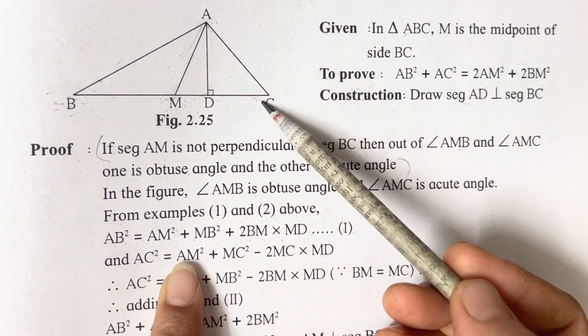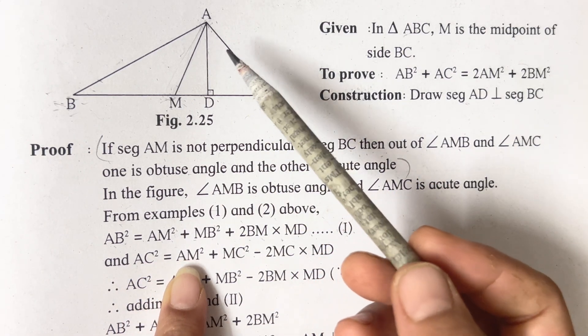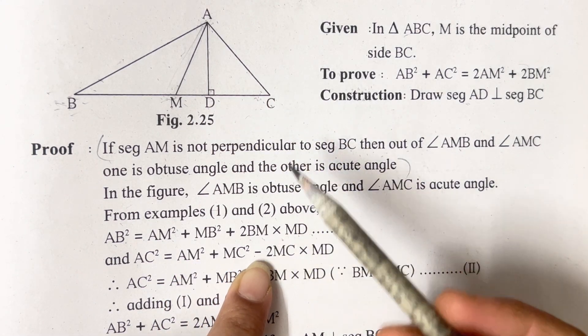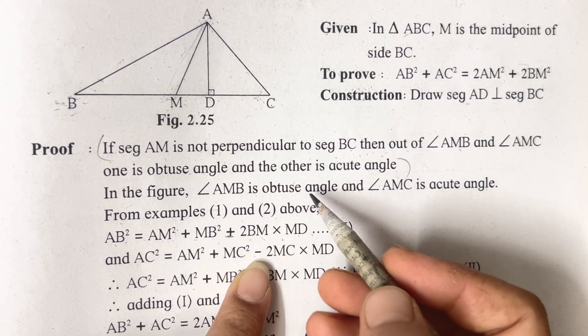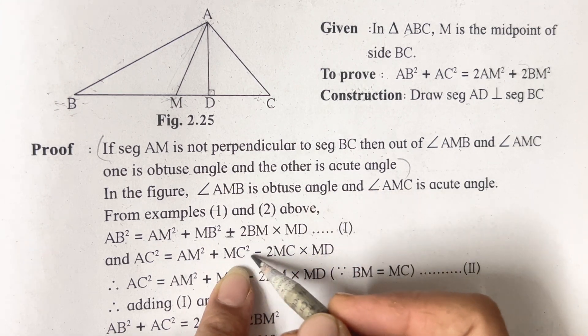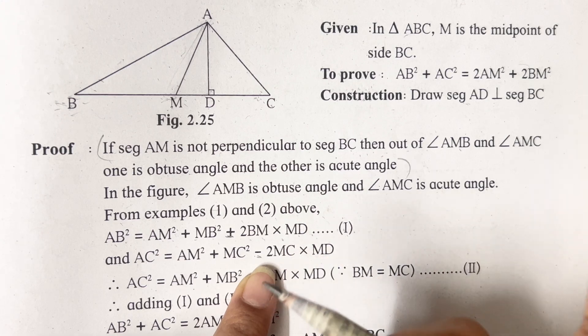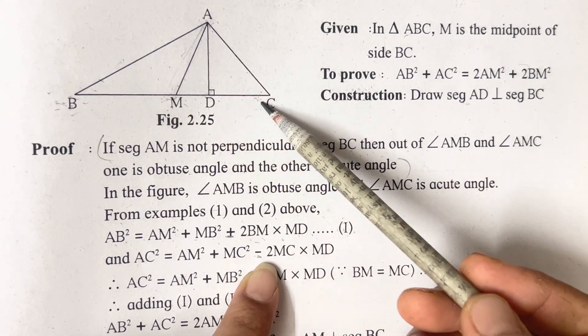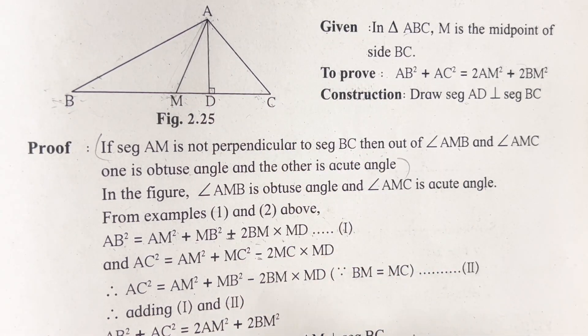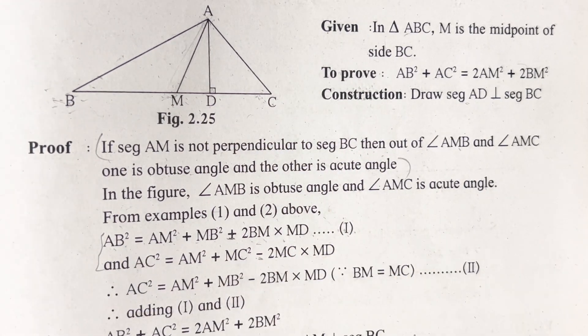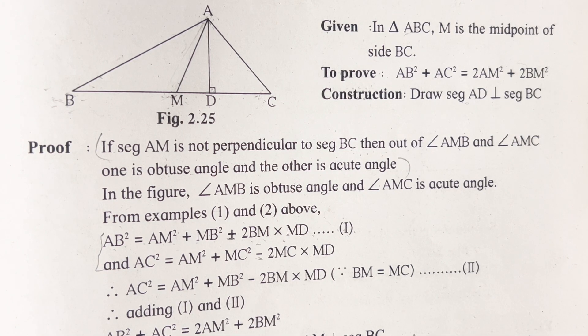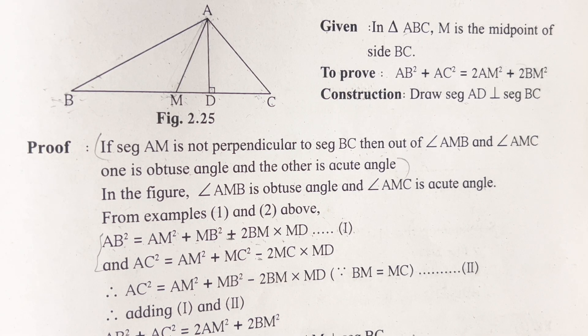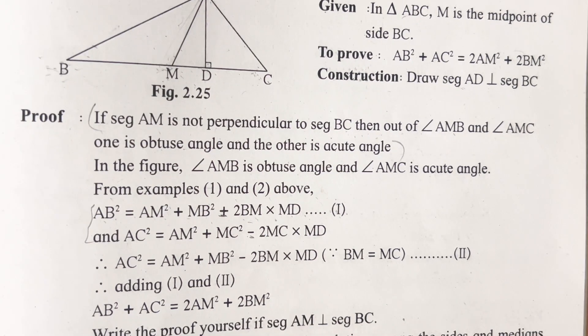Similarly, AC square is equal to AM square plus MC square minus 2MC into MD. Now over here, plus because it was an obtuse angle, minus because it is an acute angle. So remember this difference. This thing is also important - plus and minus thing. You have to remember and take into consideration. Obtuse and acute here, that is where plus and minus things I have mentioned.